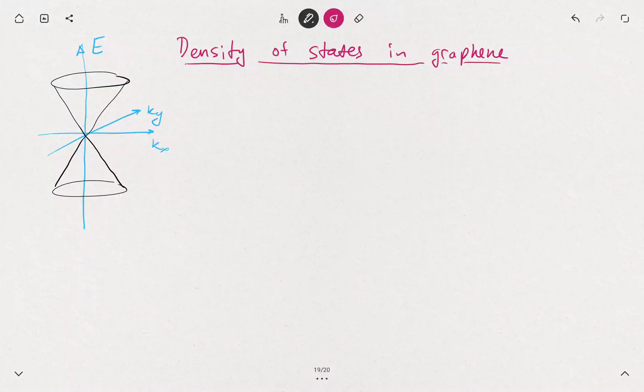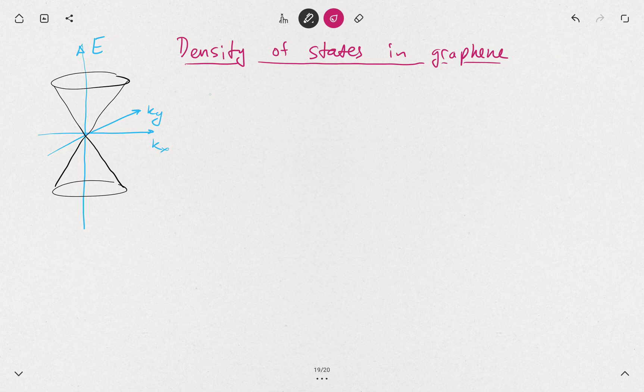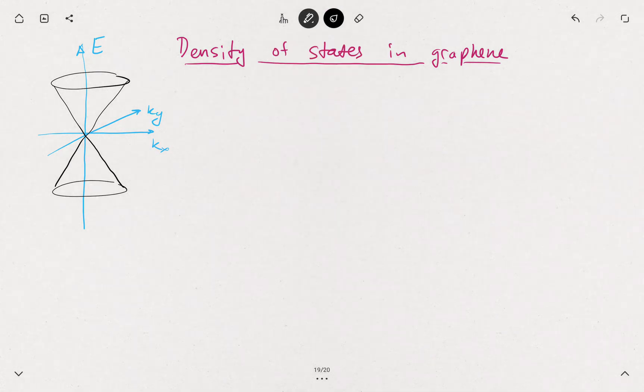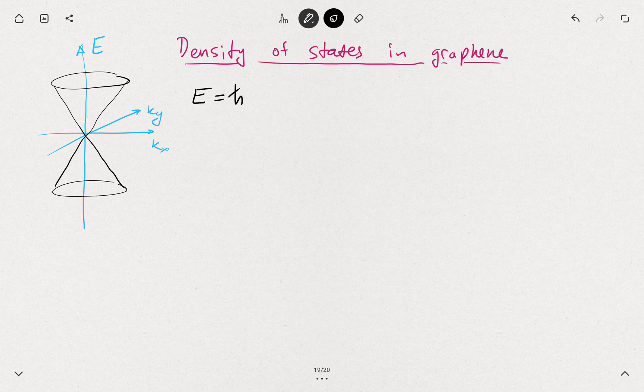Density of states in graphene can be calculated the same way as it's done for a free particle model, just we use a different dispersion relation. In graphene the energy is linearly proportional to momentum, E equals h-bar vf times k.